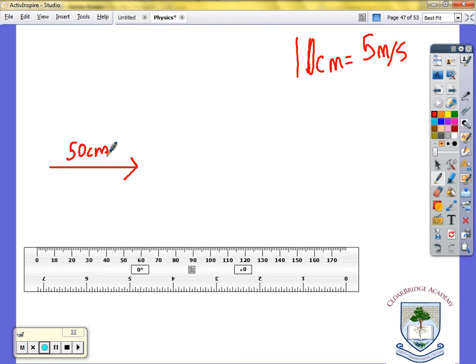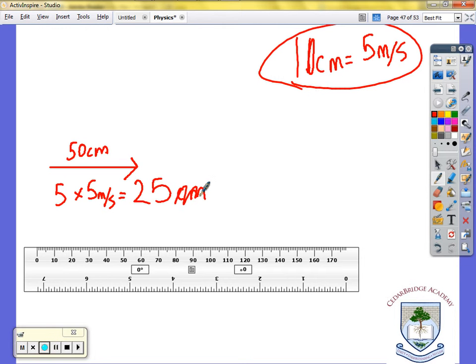They'll put a point on it and they'll tell you that this is 50 centimeters. So that is a vector because if it's 50 centimeters and it's 5 meters per second for every 10, so that's 5 times 10 equals... I didn't set up the math right.